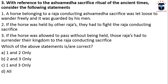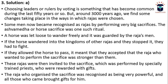The next question is: With reference to the Ashwamedha sacrifice ritual of ancient times, consider the following statements. First, a horse belonging to a raja conducting the Ashwamedha sacrifice was let loose to wander freely, guarded by his men. Second, if the horse was held by other rajas, they had to fight the raja conducting the sacrifice. Third, if the horse was allowed to pass, those rajas had to surrender their kingdom. The answer is A — statements one and two only. The third statement is incorrect because the kingdom was not to be surrendered but the rajas recognized the supreme authority of the raja conducting the sacrifice.